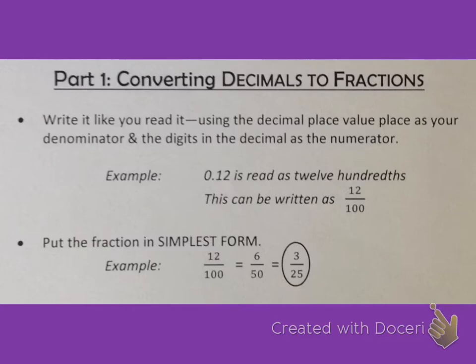For example, we have 0.12. Well, that's actually read as 12 hundredths, and you can refer to your place value chart at the top of your notes to remember what place value is what. This can be written as 12 over 100. We can also say 12 one hundredths.